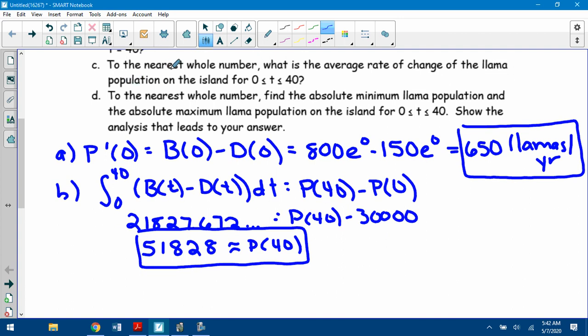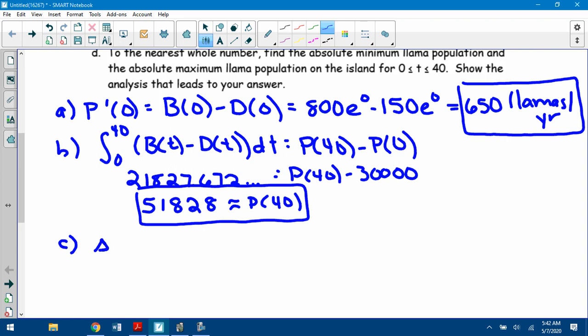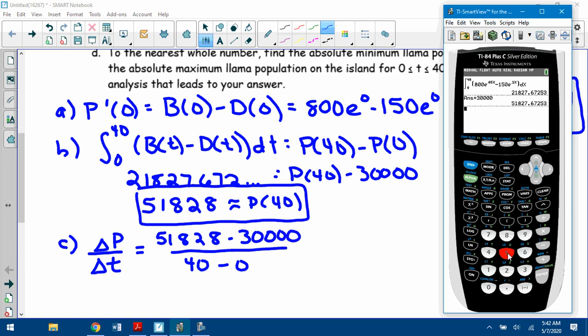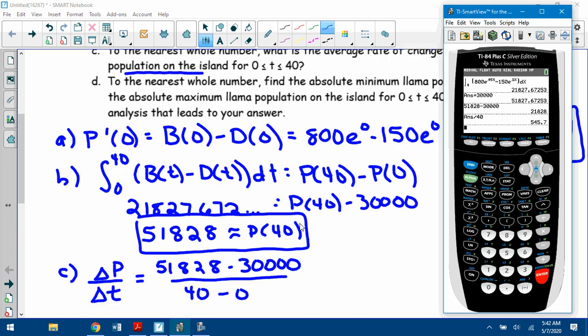There's actually two ways to do C. To the nearest whole number, what's the average rate of change of the llama population? Average rate of change of the llama population. So of the population would be change in P over change in t. So average rate of change means take the slope of population. So P(40), what we just found, minus P(0), which I know is 30,000, all over 40 minus 0. And I can plug that in. So 51,828 minus 30,000, enter, divide by 40, and I end up with 546. Again, it said to the nearest whole number.